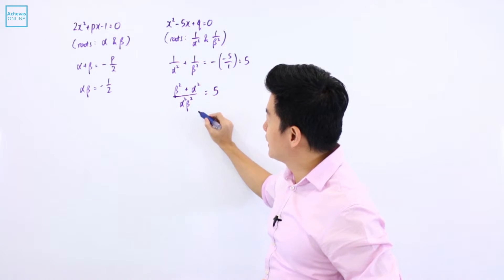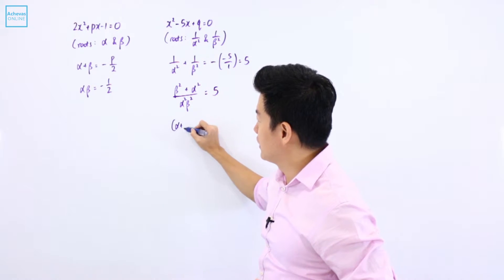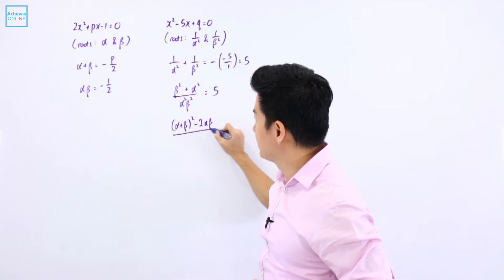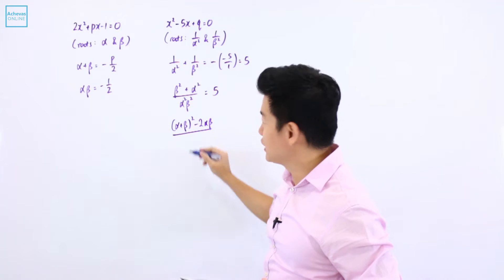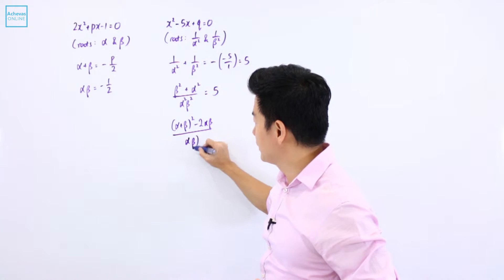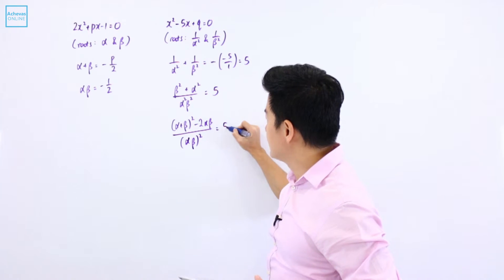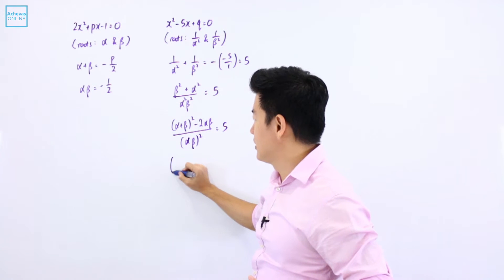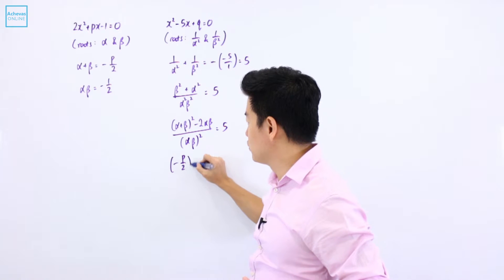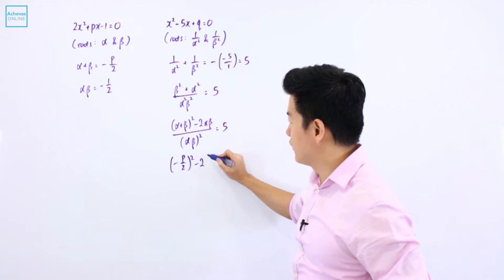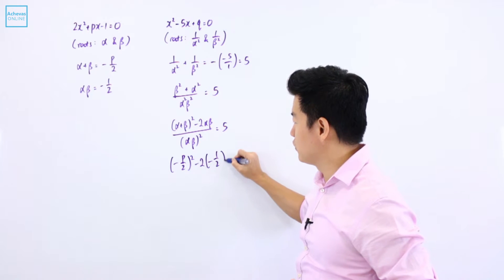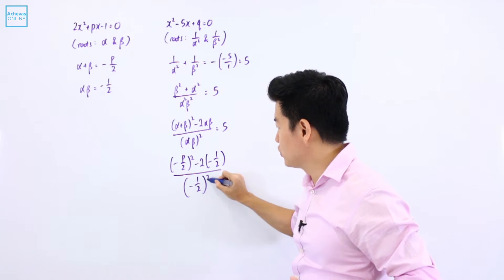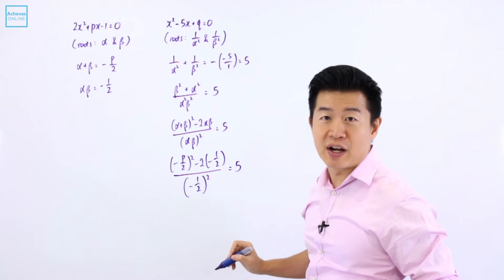Alpha squared plus beta squared is the same as (alpha plus beta) squared minus 2 alpha beta, and alpha squared times beta squared is (alpha beta) squared. This is equal to 5. Alpha plus beta is minus P over 2, minus 2 of alpha beta is minus 1 over 2, divided by minus 1 over 2 squared. This is equal to 5.